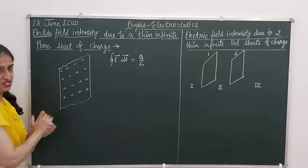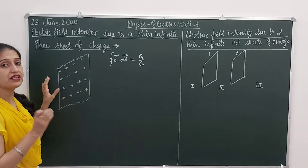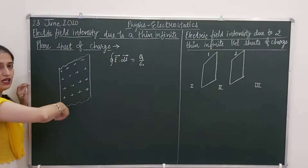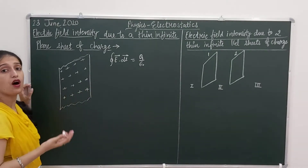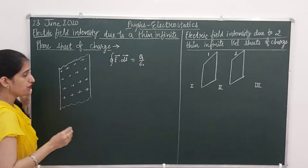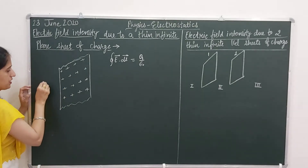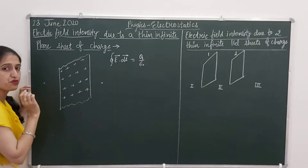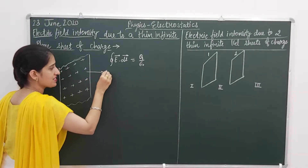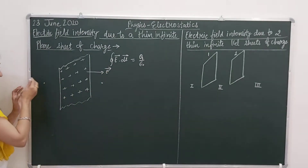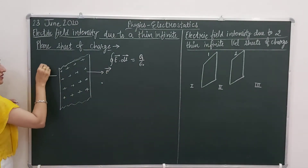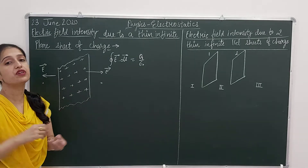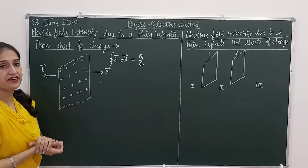Now for this sheet, firstly we need to choose a Gaussian surface as we have done in the previous topics. We cannot choose a sphere — why? Because this sheet is of infinite size. So we are considering this position. Because the sheet is positively charged and its thickness is very very thin. Due to the positive charge, electric field intensity is in the outward direction on both sides.